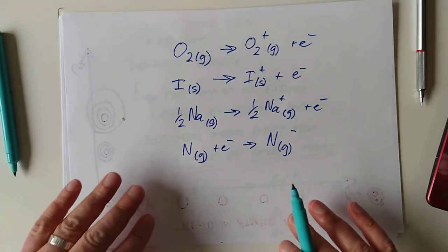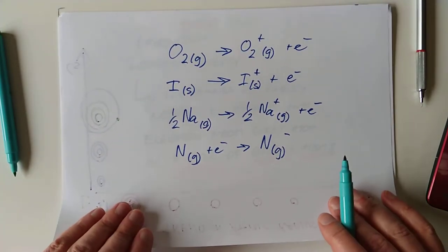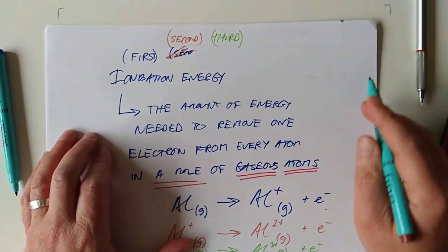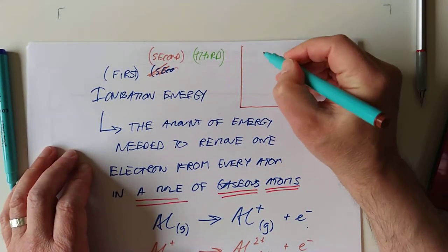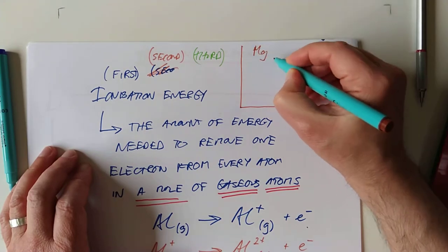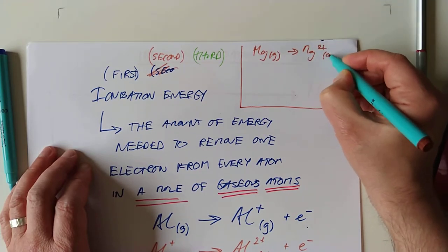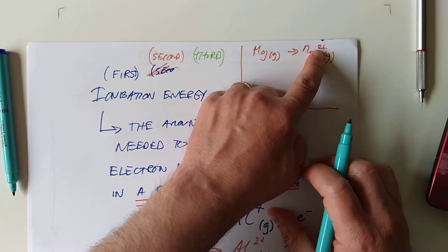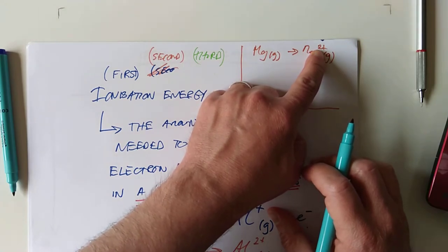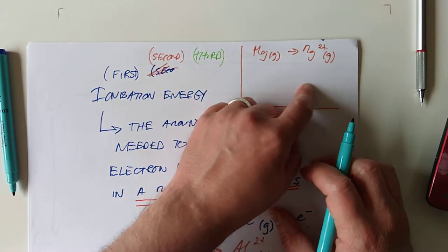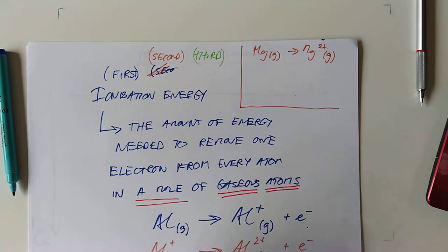The other area that I have seen them ask you about is they ask you to calculate the total energy required to do this. So, for example, they want the total energy required to change from Mg gaseous to Mg2+ gaseous. They're hoping you'll see the 2+ and go straight to the second ionization energy. But, of course, in reality, because you start with no charge here, you've got to go to 1+ and then to 2+. So, you look up your databook, which I'm just going to pause and find the actual numbers for.